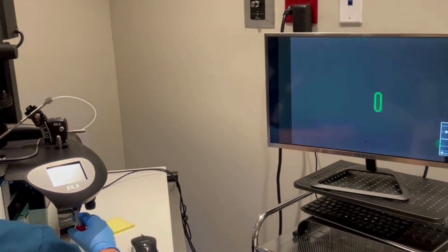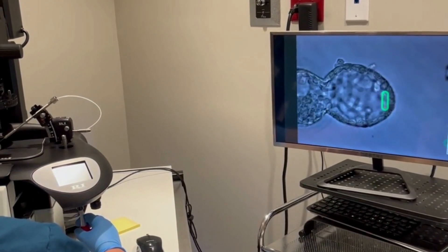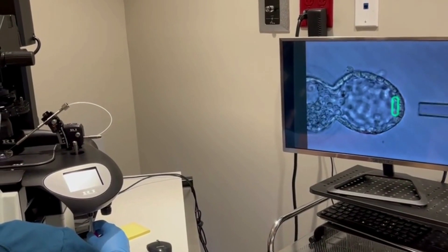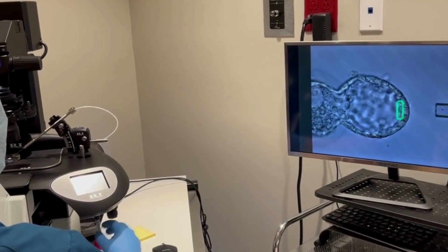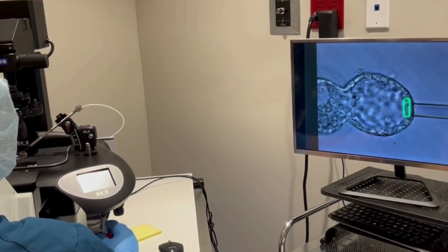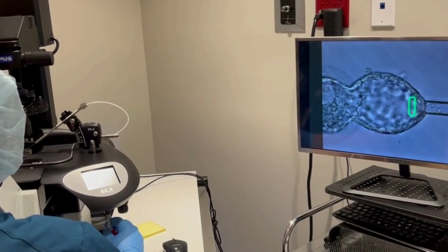After more incubation, we biopsy embryos that have reached the blastocyst stage on days five, six, and seven. And this is what you see here. We have a beautiful blastocyst, which at this point has grown to about 150 to 200 cells.